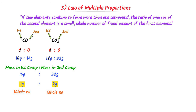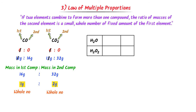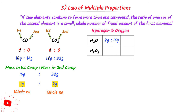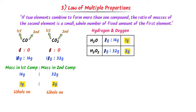Consider hydrogen and oxygen forming water and hydrogen peroxide. In water, the ratio of hydrogen to oxygen is 2 grams to 16 grams. In hydrogen peroxide, it is 2 grams to 32 grams. Fixing hydrogen at 2 grams, the ratio of oxygen in the two compounds is 16 to 32, which simplifies to 1 to 2 — again small whole numbers, confirming the law of multiple proportion.